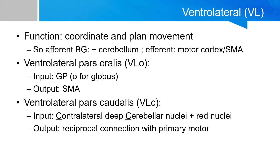The ventral lateral nucleus can be further subdivided into the pars oralis and pars caudalis. This is not high yield for the exam, but a useful mnemonic: the pars oralis (O) connects to the globus pallidus, whereas the pars caudalis (C) connects to the contralateral deep cerebellar nuclei.